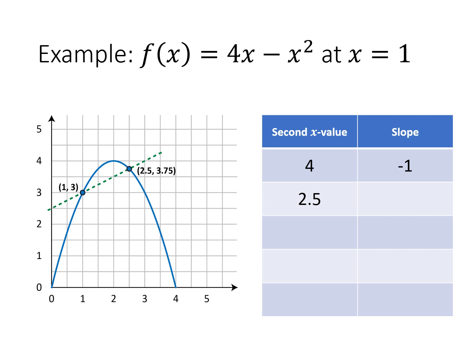Now let's pick another point, closer this time. I chose x equals 2.5. Notice that the tangent line and the secant line are getting closer — it's still not quite exactly what I want, but it's getting better. Writing the slope as (y₂ minus y₁) divided by (x₂ minus x₁): my two y values are 3.75 and 3, and my two x values are 2.5 and 1. That works out to be positive 0.5. So that's the slope of the green secant line, and we're still trying to figure out the slope of that purple tangent line.